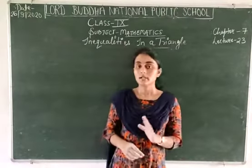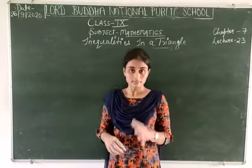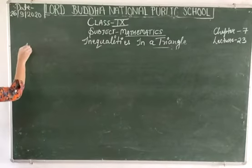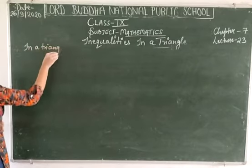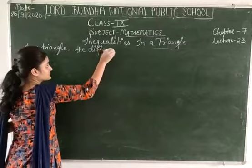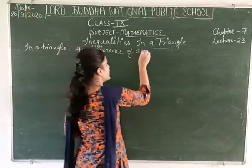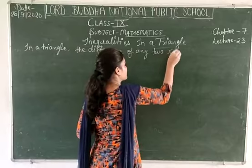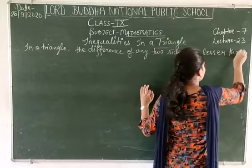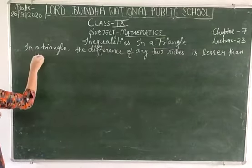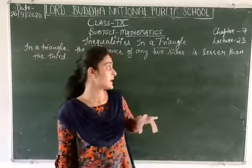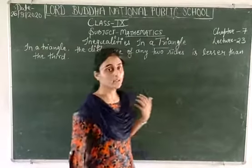Hello class. Today this is the last theorem of inequality in a triangle, and it states that in a triangle the difference of any two sides is lesser than the third side. So in a triangle, if you take the difference between any two sides, then it will be lesser than the third one.